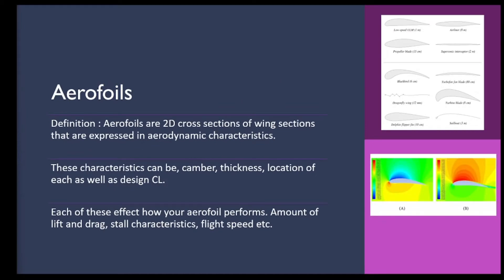Aerofoils are basically how your wing is defined — a 2D cross-section of your wing platform. As you can see on the image here, there are different aerofoils for different speeds: low-speed aerofoils, airliners, supersonics, and even unusual ones like a dragonfly's wing or sailboats. These are characterized by their camber — basically how curved the line is, running from the front to the back of the wing.